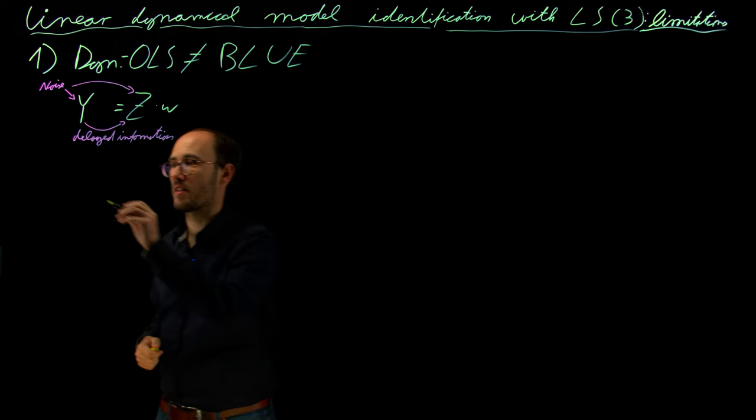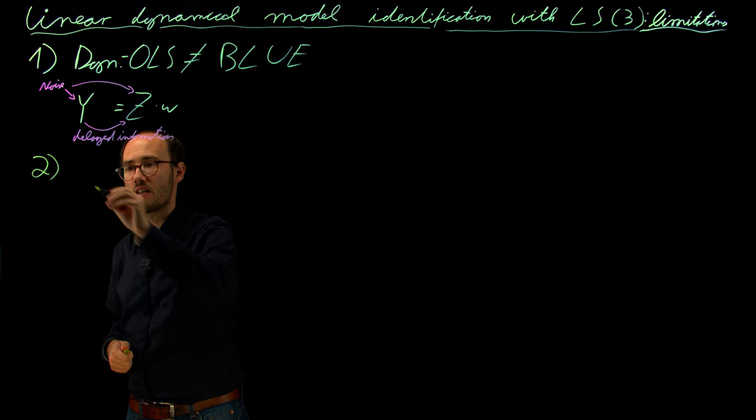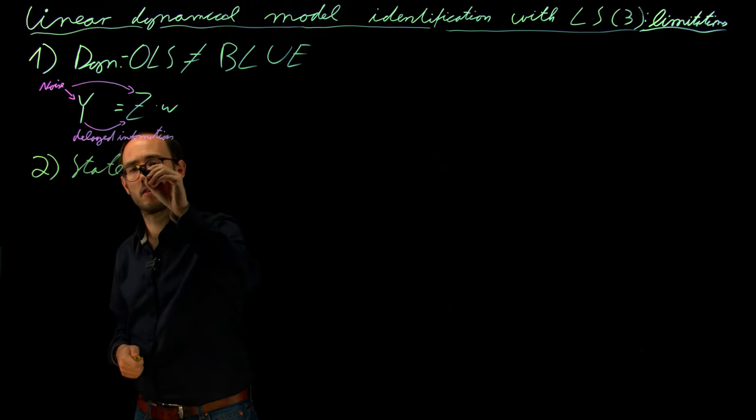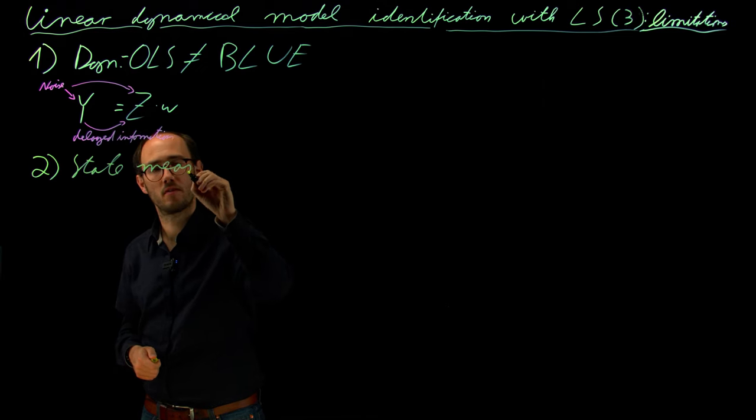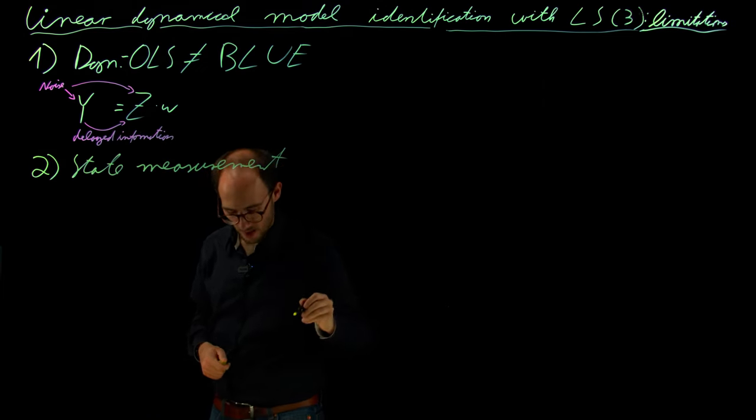What is the second limitation? The second limitation is basically that we need state measurements. We have assumed that we have direct access to x.